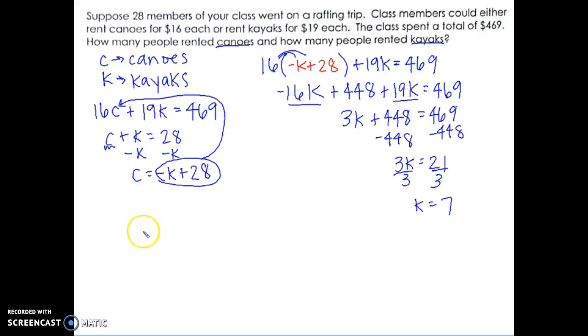So that means there are 7 kayaks. It also wants to know how many canoes there are. So I'm just going to plug it back in. I've already got C by itself here, so I'm going to plug 7 into that equation. So C equals negative 7 plus 28, which is 21. So there are 21 canoes.